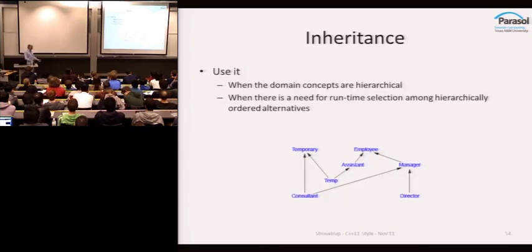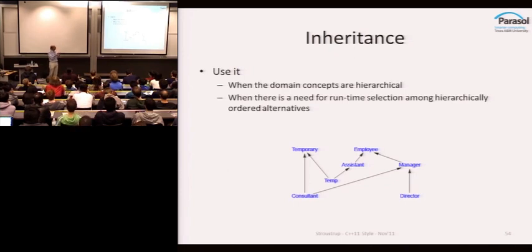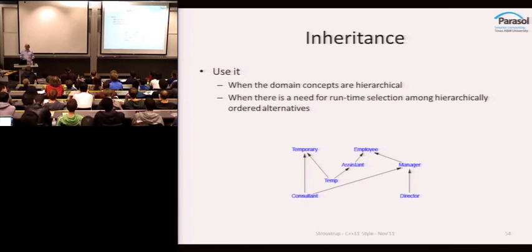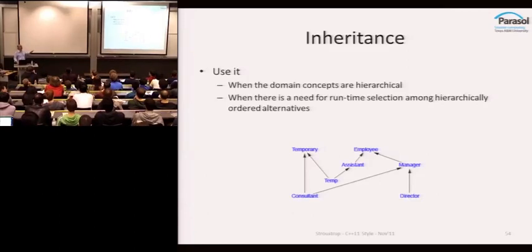I keep hearing that C++ is object-oriented. Yes, it supports object-oriented things — which means if your domain has hierarchies, like the graphical domain tends to, you can use it, especially when there is a need for runtime selection among alternatives. But the point is: where do you use inheritance? The answer is where the problem demands it — not because it's cool or because someone said member functions are good for your health.